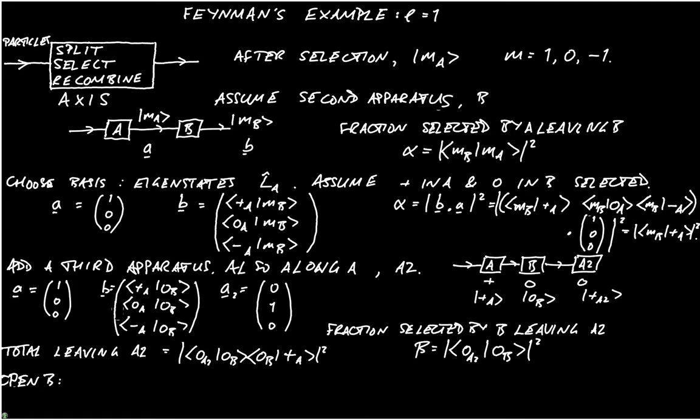And we could write that as being so the total leaving A2 would then be the sum over MB of the square modulus of zero A2, MB, and then MB plus A.